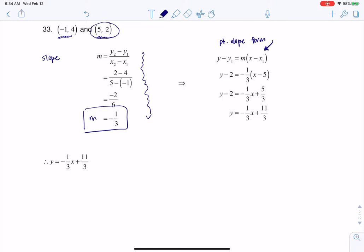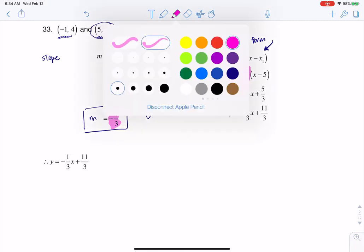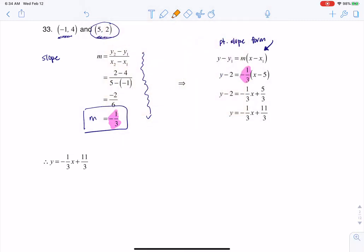So let me go with some color coding here. So you see my slope is negative one third, and I plugged it into the point-slope formula for m. And then you see that my y-coordinate is two here, and you see me plugging that in. You also can see that my x-coordinate is five, and I'm plugging that into the formula.